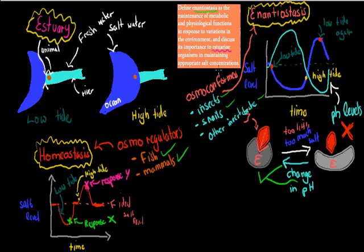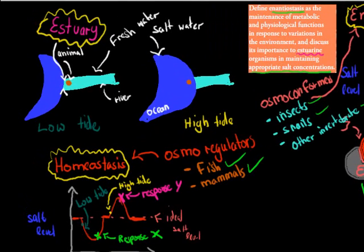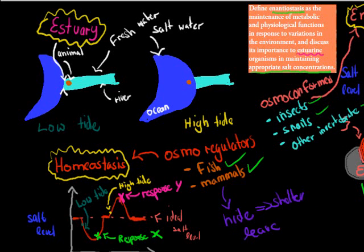The dot point also says discuss why it's important for creatures living in an estuary to maintain appropriate salt concentrations. For fish and mammals, they can't actually deal with too high fluctuations. It's like we can survive in 40 degrees Celsius or down to minus 5, but imagine if we had fluctuations between minus 100 and plus 100 in one day. Even though we can regulate our own body temperatures, that would be too extreme. Same with these fish and mammals that live there, they have to hide. When the high tide comes, they go and seek shelter or just leave the area. They can't deal with those crazy high salt levels because their enzymes would get denatured.